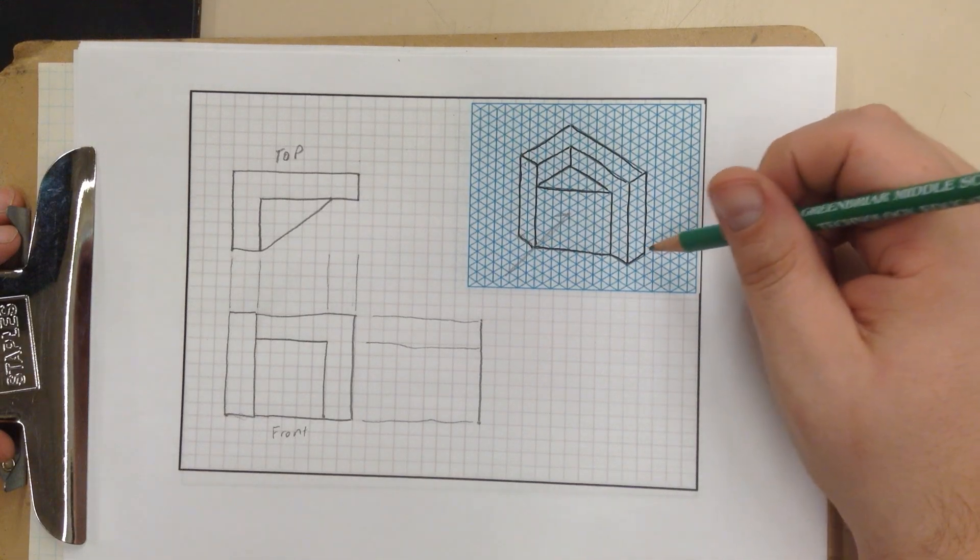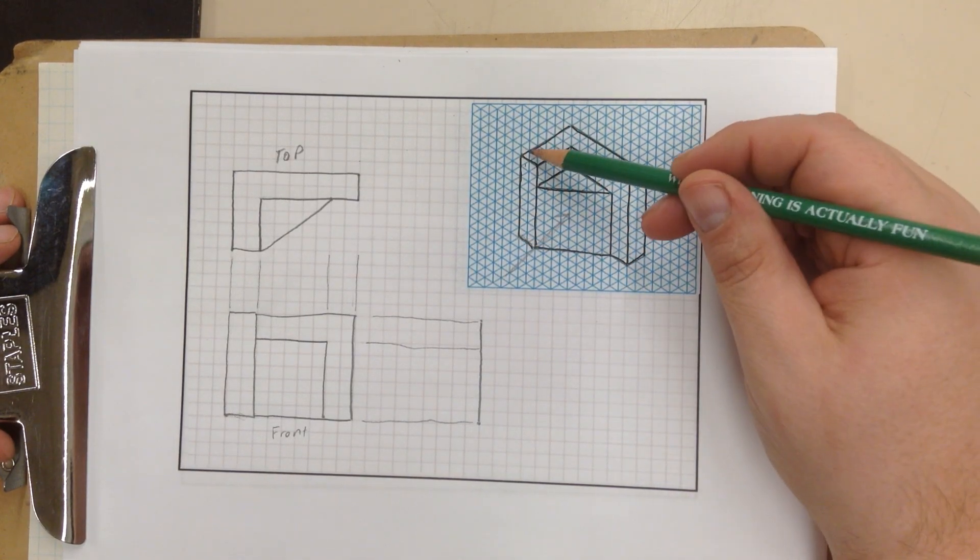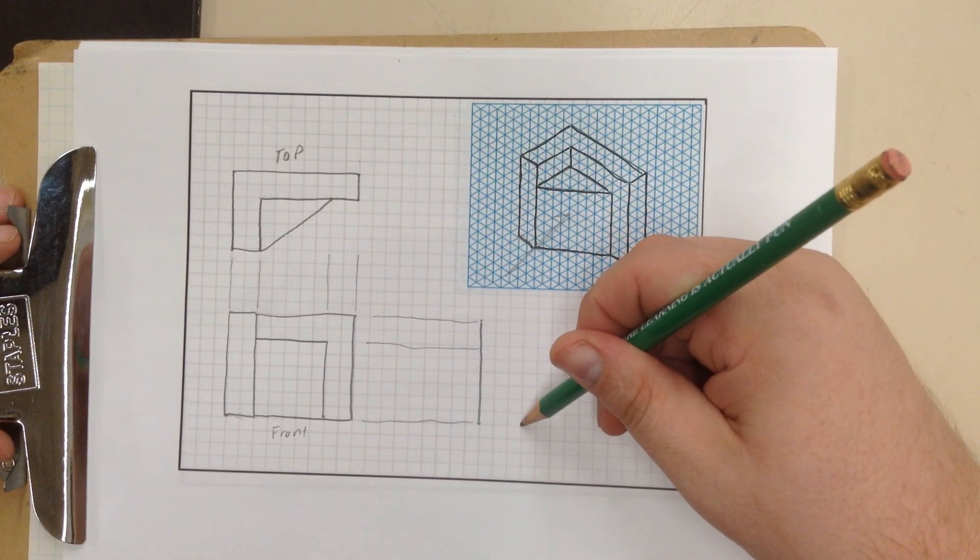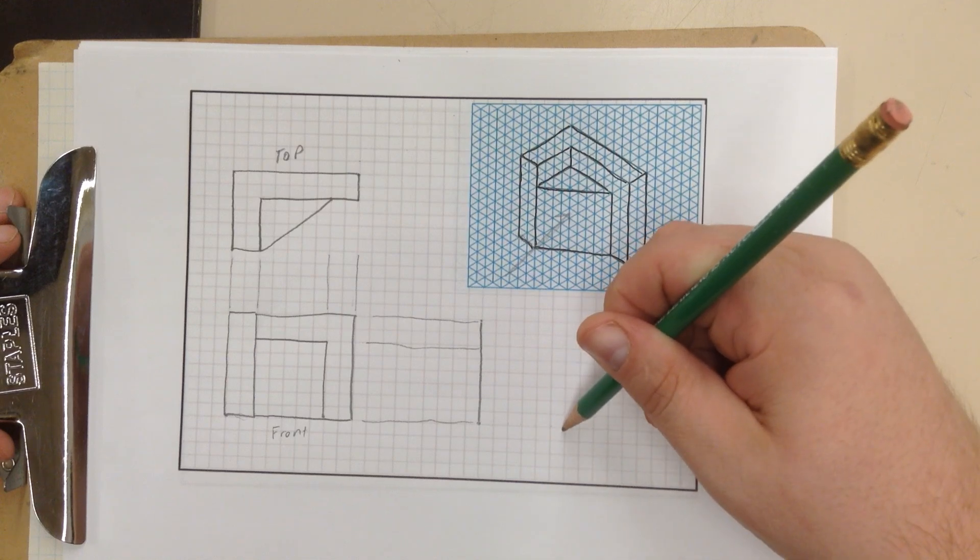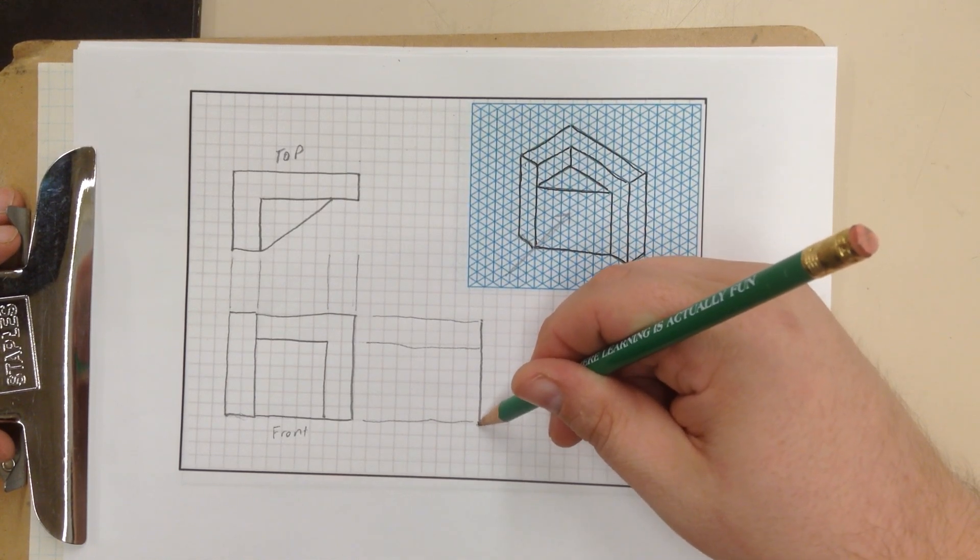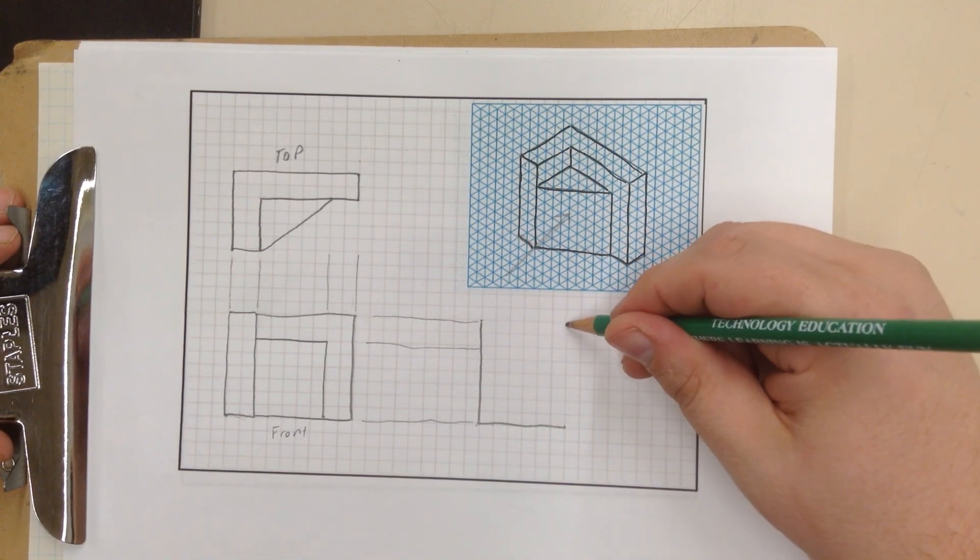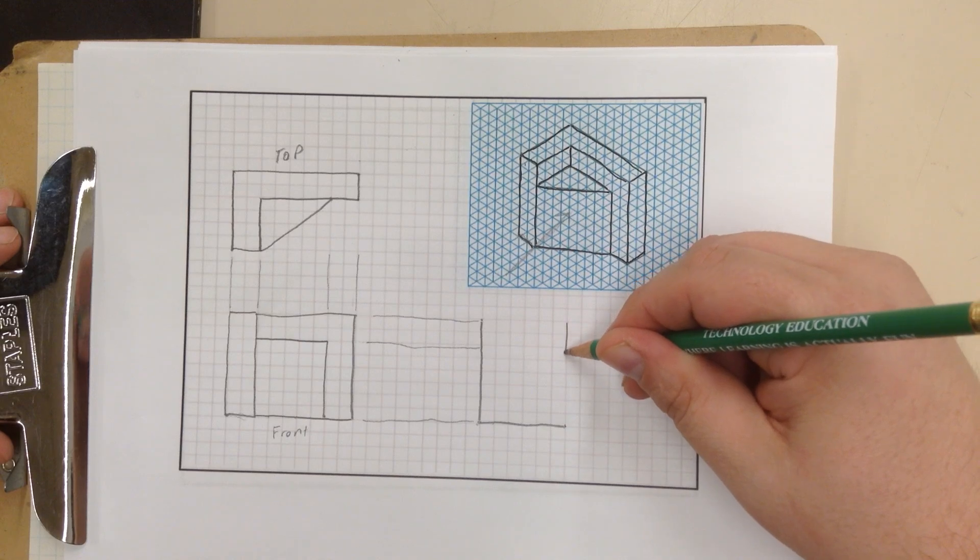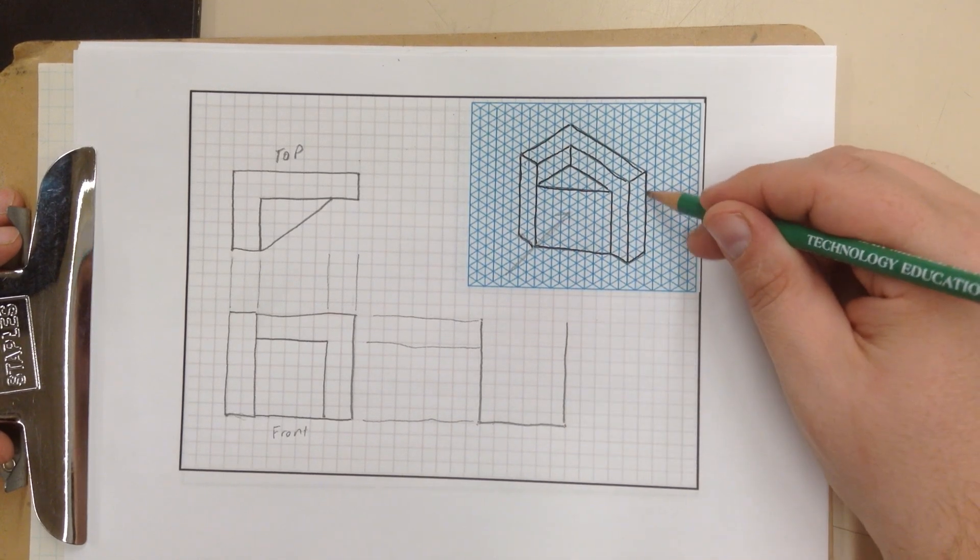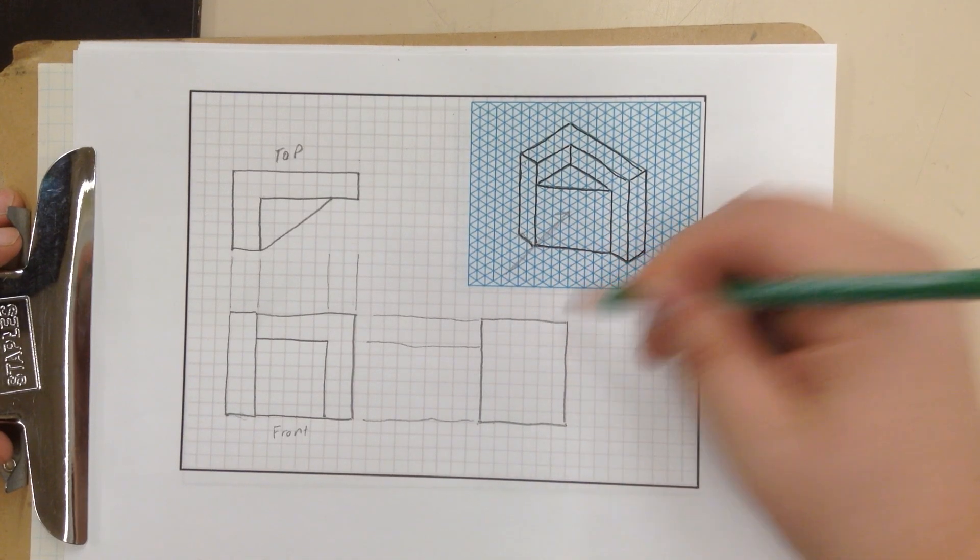And I can go ahead and draw in my outside edge. Now if I look at how wide this is, starting from the left, going to the right, it is 1, 2, 3, 4, 5, 6 wide. So 1, 2, 3, 4, 5, 6. And I can draw my bottom edge right there. It is the same amount high on this side. This corresponds to that line right there. And I have it like so.